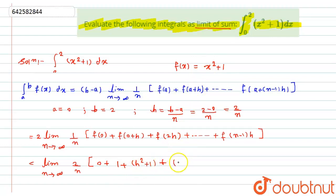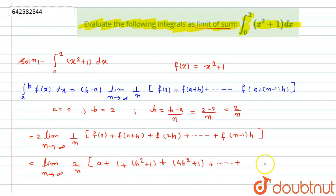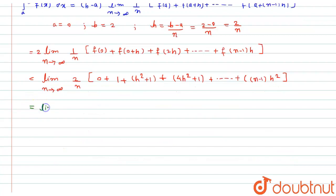Similarly up to the last term, putting (n minus 1)h, I will get (n minus 1)h squared. So it will become the limit as n tends to infinity, 2 by n. Looking at all the constant terms, this 1, 1, 1, 1 going on up to n terms, so I can directly say n plus, taking h squared common to all of them, it gives 1 squared plus 2 squared plus 3 squared up to (n minus 1) squared.